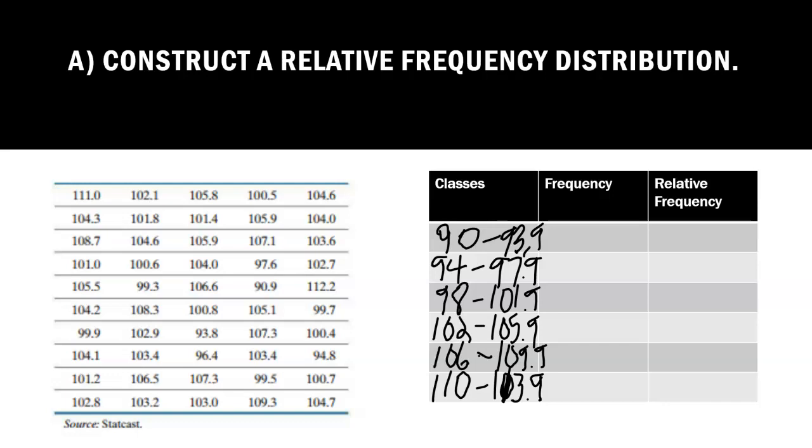The frequency would be found by counting the numbers that fall into that range. We've got to do some counting. We want to count how many numbers fall between 90 and 93.9. If I go down the first column, I don't see any. I don't see any in the second column. I see one in the third column and one in the fourth column. So I think that is two. I only see two in that class.